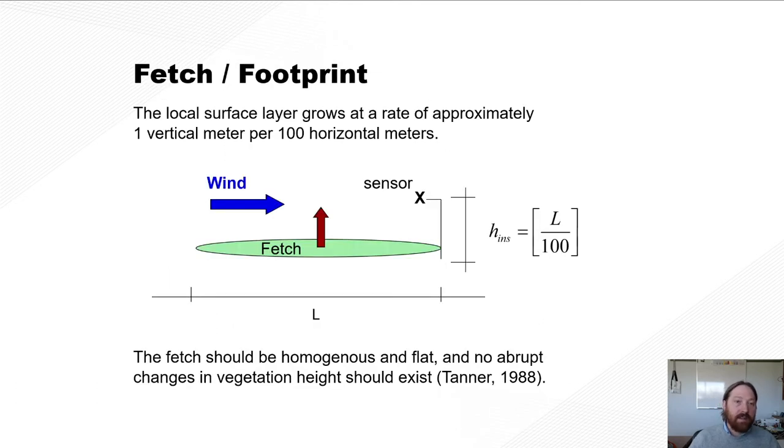So to summarize here, again, the local surface layer grows at a rate of approximately one vertical meter per 100 horizontal meters, and that the fetch should be homogeneous and flat and not have any abrupt changes in vegetation height.